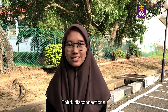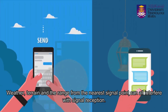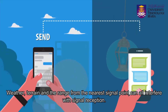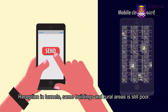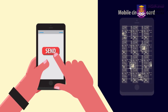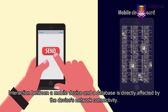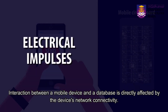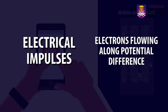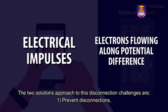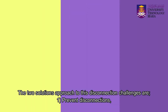Third is disconnection. Weather, terrain, and the range from the nearest signal point can all interfere with signal reception. Reception in some buildings and rural areas is still poor. Interaction between a mobile device and a database is directly affected by the device's network connectivity. The two solution approaches to the disconnection challenge are: first, prevent disconnections; second, cope with disconnections.